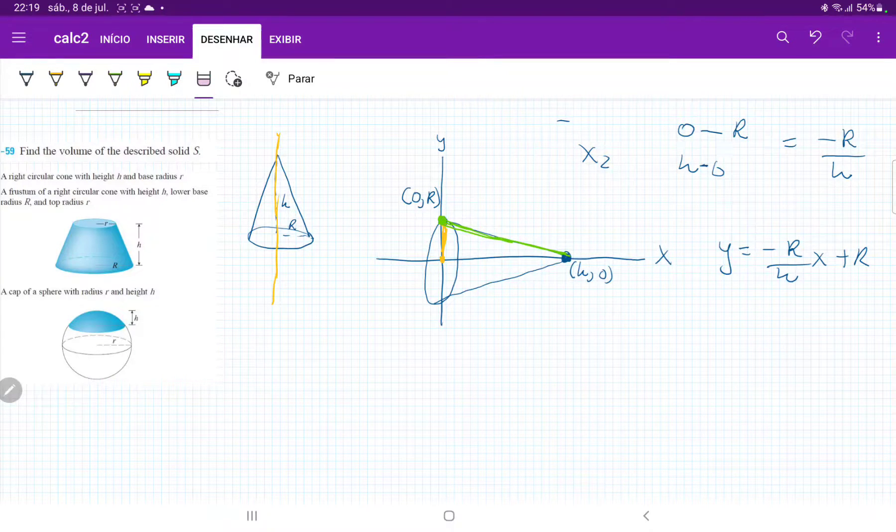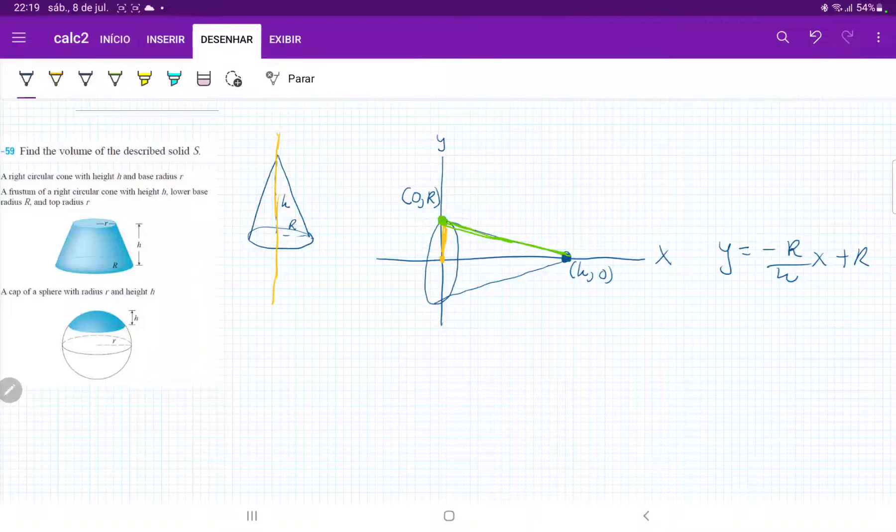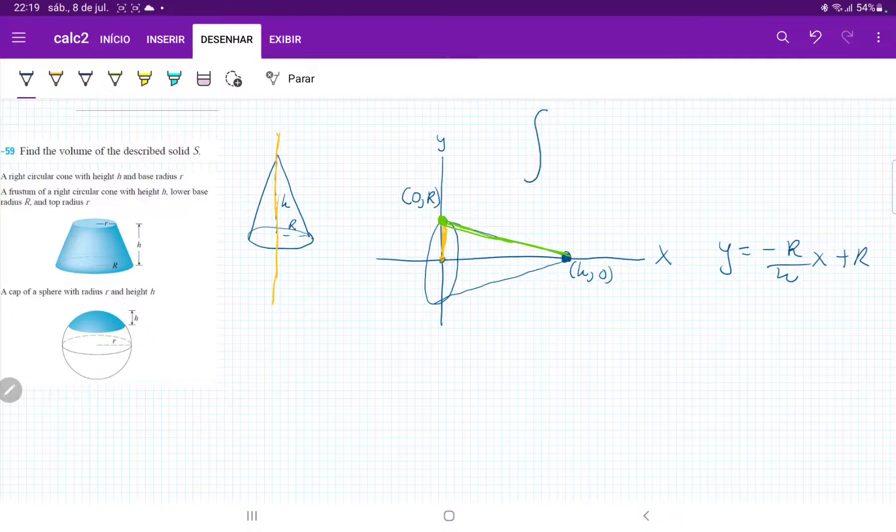Our integral, the way that we're going to set it up is we're integrating from x is equal to 0 all the way up to x is equal to h. So from 0 to h.